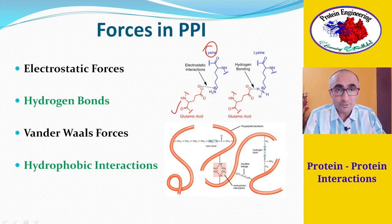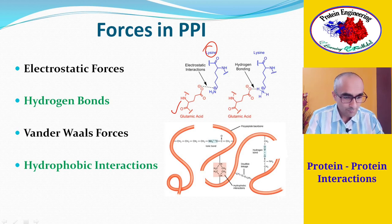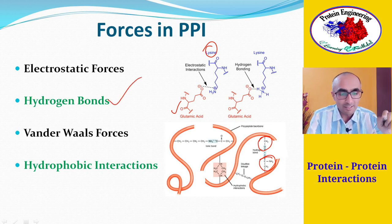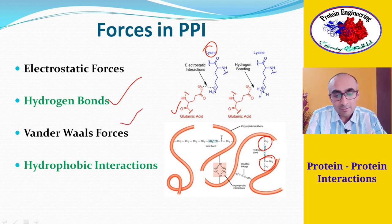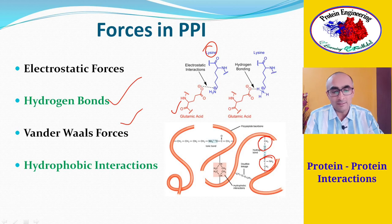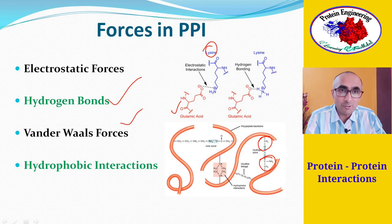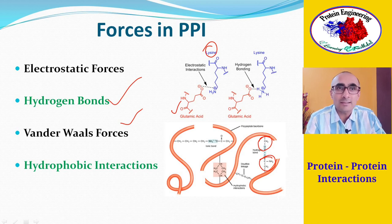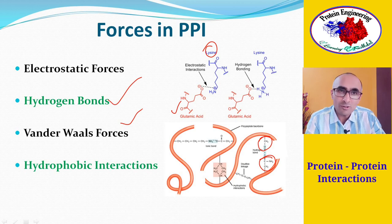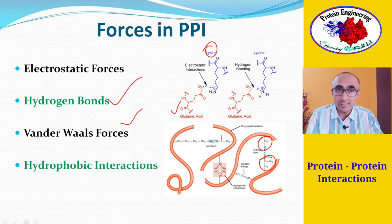If polar groups come together on the interface from both protein molecules — for example, serine or asparagine — those polar groups form hydrogen bonds. Similarly, if non-polar, hydrophobic amino acids come together, they are attracted through van der Waals forces via hydrophobic interactions. Proteins with more non-polar surface stretches tend to associate together more, because those non-polar stretches do not interact with water. That is why in water, proteins with more non-polar surfaces tend to associate together and form an oligomeric state.